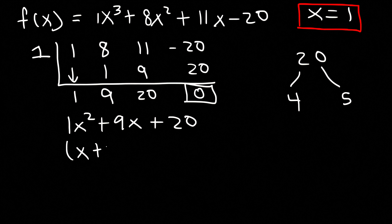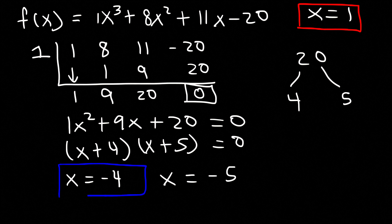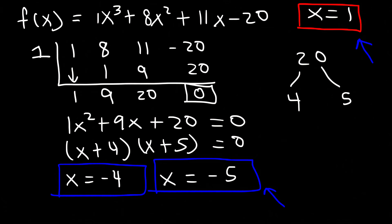So factoring gives (x + 4)(x + 5) = 0. Setting each equal to 0, x = -4 and x = -5. So we now have three zeros of the polynomial function: 1, -5, and -4.